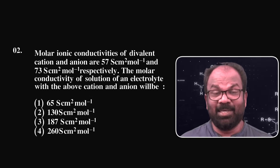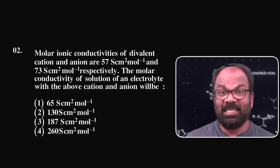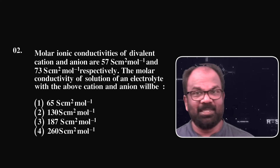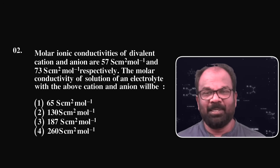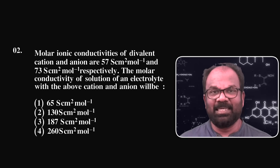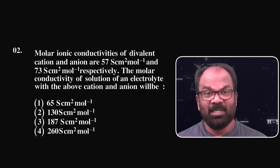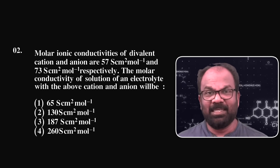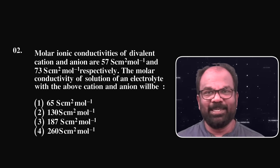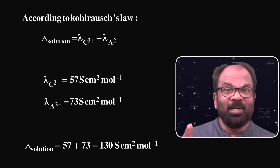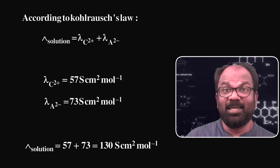Question number 2: Molar ionic conductivities of a divalent cation and anion are 57 siemen cm² mol⁻¹ and 73 siemen cm² mol⁻¹ respectively. The molar conductivity of a solution of an electrolyte with the above cation and anion will be: option 1 - 65, option 2 - 130, option 3 - 187, option 4 - 260 siemen cm² mol⁻¹. According to Kohlrausch's law, molar conductance at infinite dilution equals the sum of molar conductances of the cations and anions present in the solution.